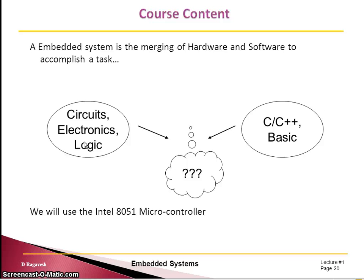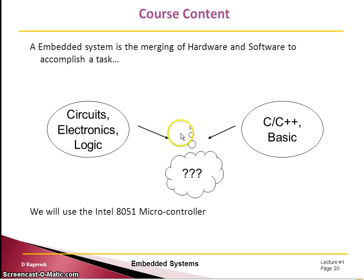As human beings, we cannot imagine such things — it does enormous work which gives us a lot of comfort. Basically, it has a circuit, that means a kind of microcontroller, plus other additional circuits, and that has been programmed using a programming language. So these two together give us a kind of embedded system. An embedded system is a kind of merging of hardware and software to accomplish a task.